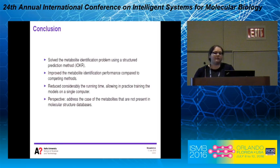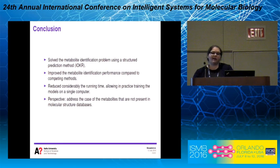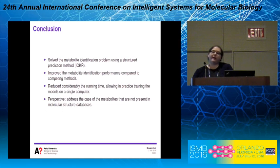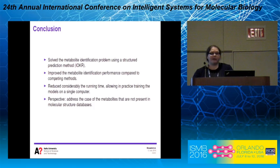In conclusion, we proposed to solve the metabolite identification problem using a structured prediction method called input-output kernel regression. We showed that our method improves metabolite identification performance compared to the competing method, and considerably reduces running time, allowing training and testing on a single computer without needing a cluster. As a future perspective, we would like to address the case of metabolites not present in the molecular structure database, since currently in the pre-image step we are limited to finding the closest molecule in databases like PubChem.